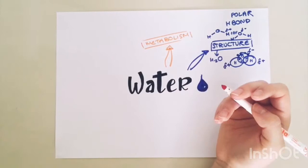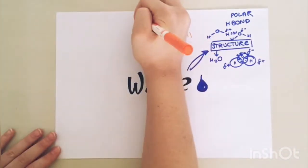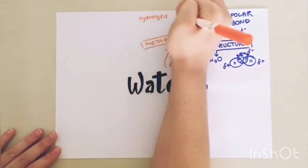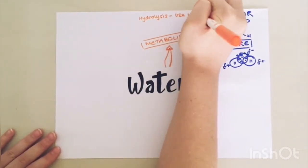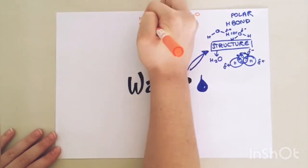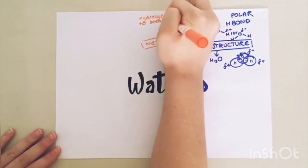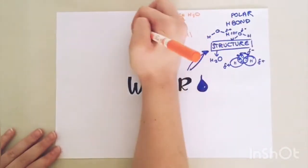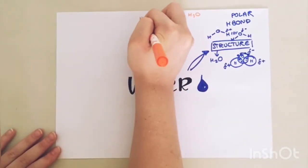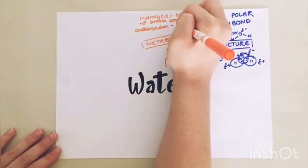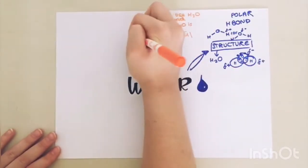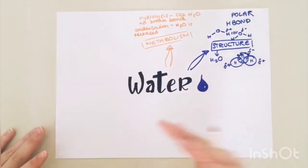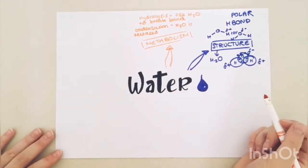Water usually takes place in hydrolysis reactions which use H2O to break an existing bond, for example in the digestion of polymers, and then condensation reactions where H2O is released when a new bond is formed, for example amino acids joining together to create a polypeptide.